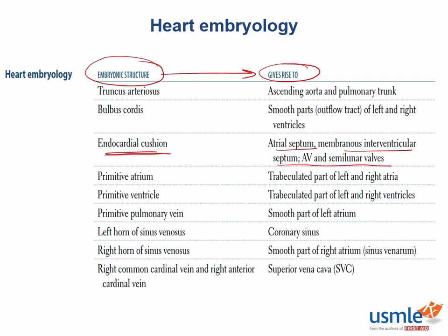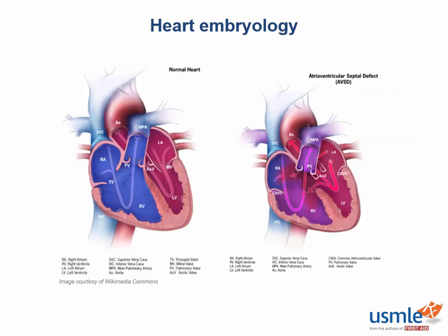So how might this help you? Well, if you're given a patient with Down syndrome and you're told that they have an atrioventricular septal defect, you could memorize that this is commonly due to endocardial cushion defect. Or, you could think back to which embryologic structure was involved in creating the atria and the intraventricular septum — and that would be the endocardial cushions.